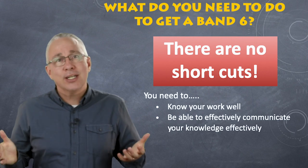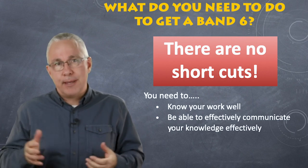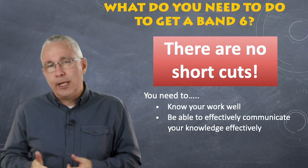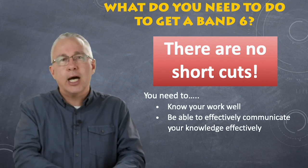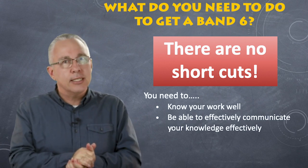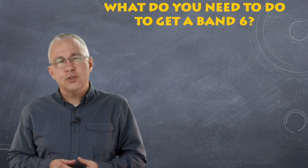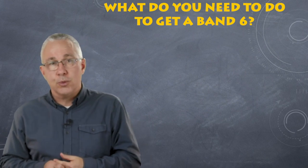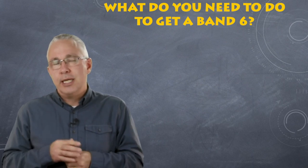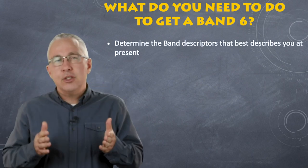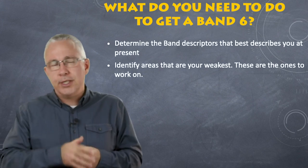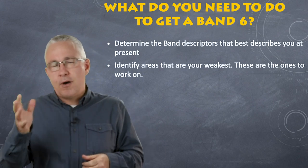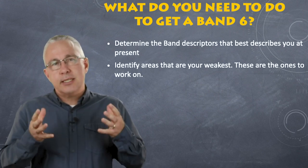So what do you need to get a band 6? I'm sorry to say there are no shortcuts — you're going to have to work hard. You need to know your work well and communicate it well. It doesn't matter if you know it in your head; if you can't write it down and express it, it won't help you. Know the course performance descriptions for your subject, learn to recognise what's asked for in each question, find out the areas you're weakest in, and work on those. If you have a problem rearranging equations, work on that. If interpreting graphs is a weakness, find past paper questions on graphs and practice, practice, practice.